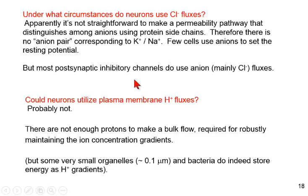Could neurons utilize plasma membrane proton fluxes? After all, seawater has a pH of 7. Our blood has a pH of 7. Probably not. There simply are not enough protons, concentration of 10 to the minus 7, to make a bulk flow, which is required for robustly maintaining the ion concentration gradients. However, proton gradients do work for very small organelles and for very small cells. Small organelles do use proton gradients, and bacteria and mitochondria do use proton gradients. But for a big neuron, it's impractical. From first principles, we can eliminate chloride because proteins don't accurately discriminate between anion pairs, and protons, there are just too few of them to make a bulk flow.